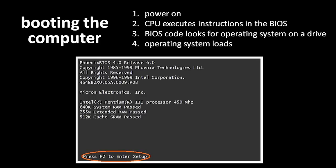When a computer system is powered on, it goes through this process we call booting. The first thing that happens after the power is turned on is that the CPU executes instructions in a chip on the motherboard called the BIOS. The BIOS is simply a chip which stores a small amount of code, and the CPU looks there to find its first instructions.